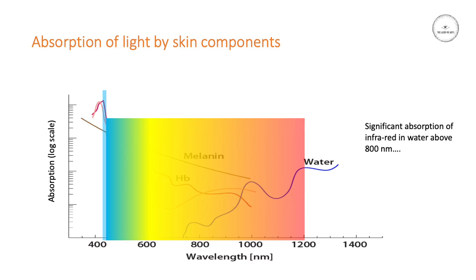The problem we may have is that because water starts to absorb light energy above 750 to 800 nanometers, it will begin to heat up for all wavelengths above that cutoff. For IPL systems, there's about 400 to 450 nanometers worth of energy there which will heat up the tissue water. It's this heating of the water that leads to thermal pain in the dermis. So you must make sure that you are using sufficient skin surface cooling to mitigate against this.